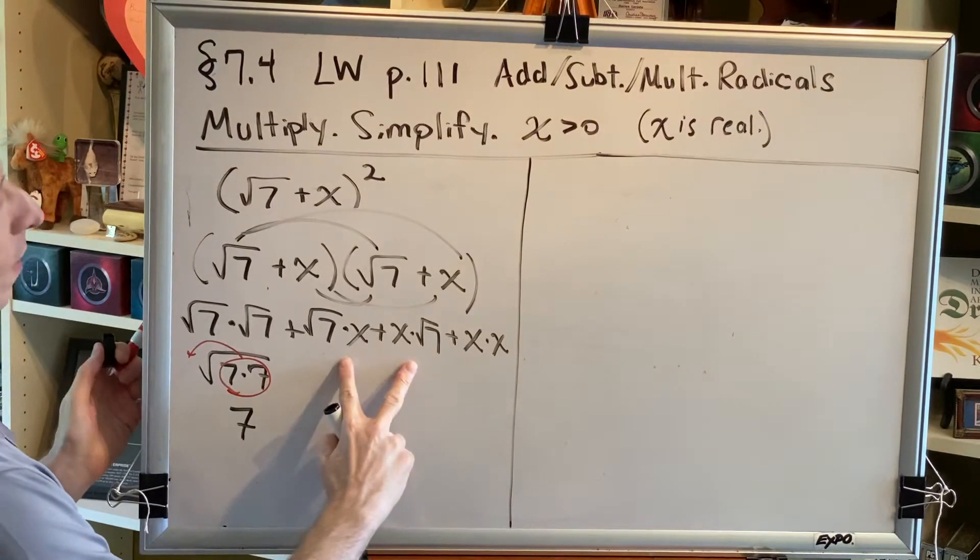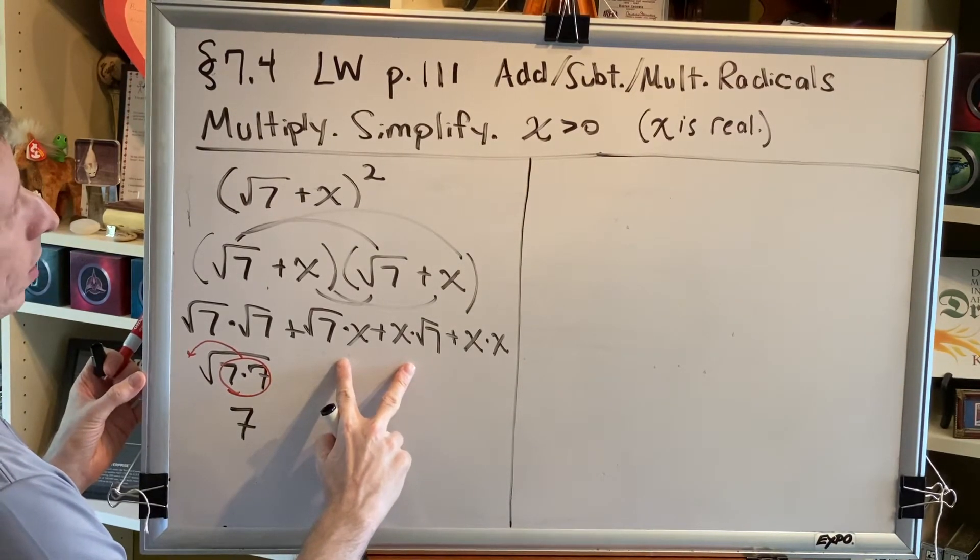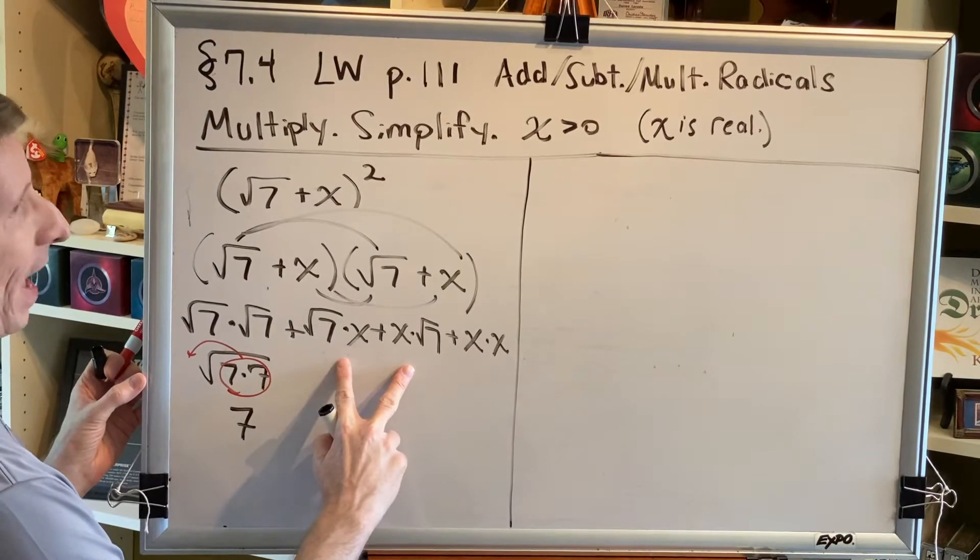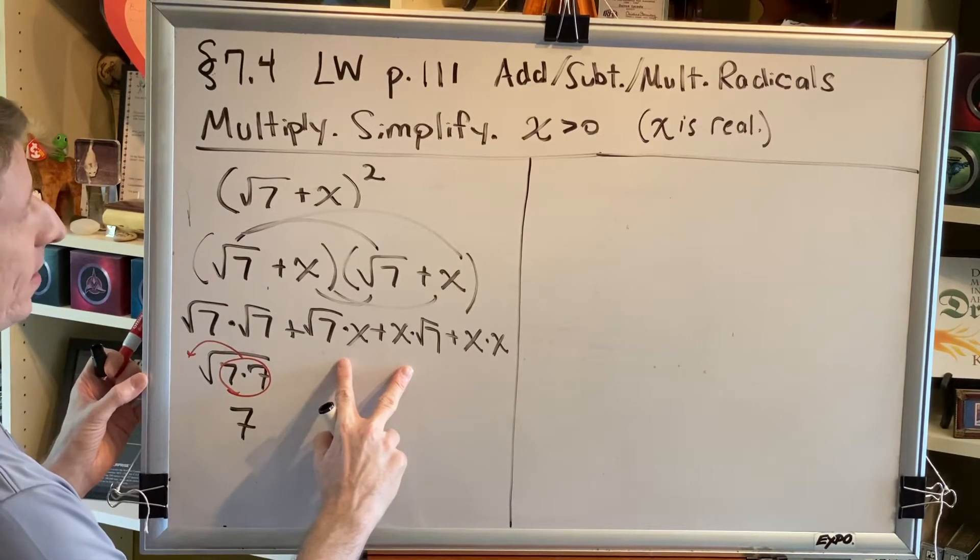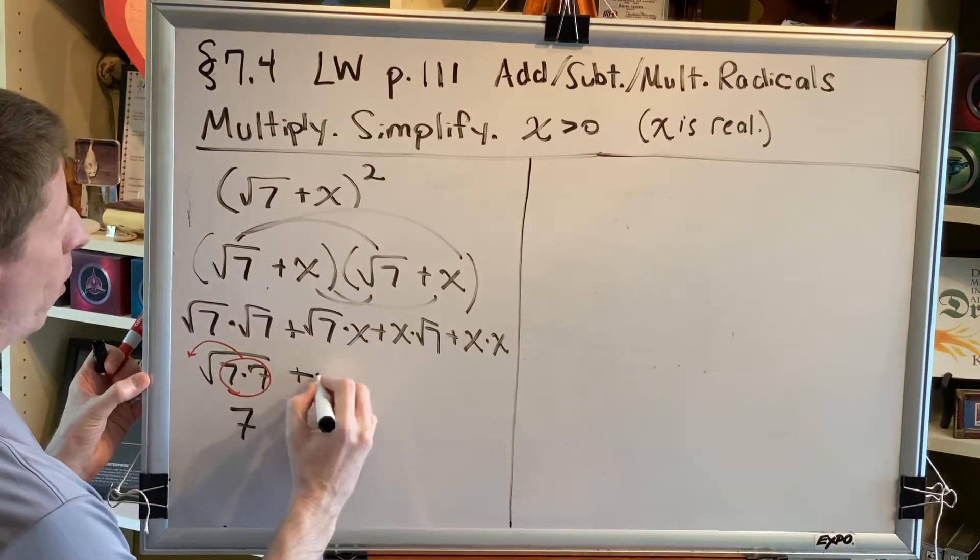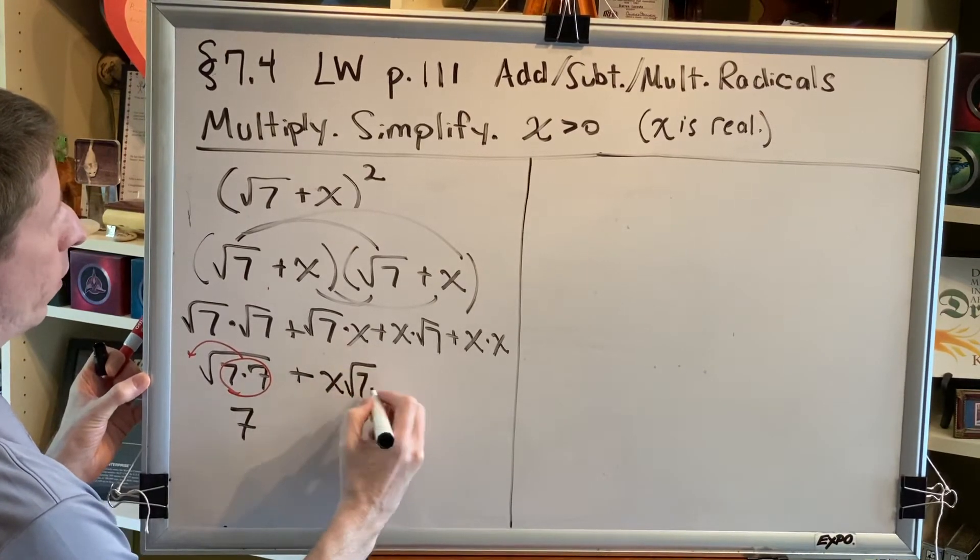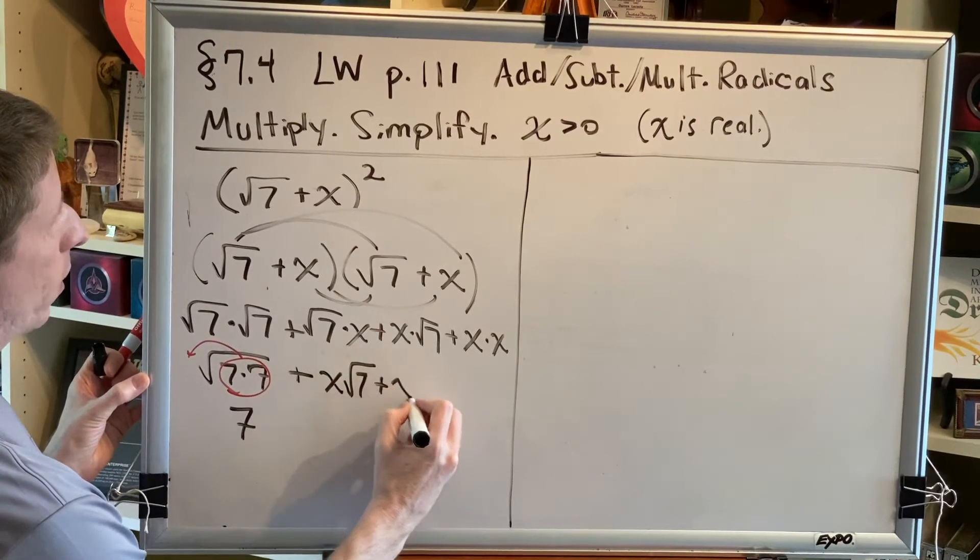Now, when you have a radical, it is often the case that the radical is put at the end for consistency. Therefore, I'm going to write both of these the same way. I'm going to write them as both plus x square root of 7.